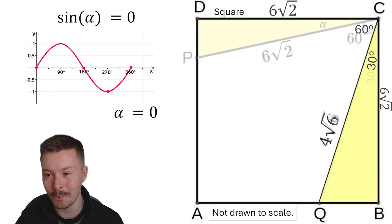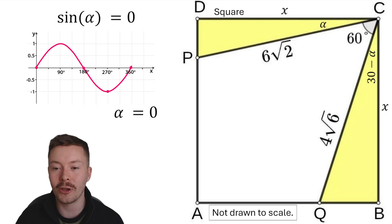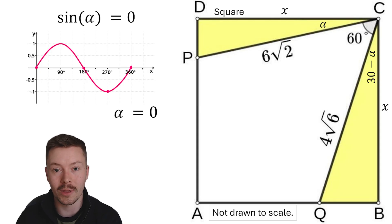The side length is 6 root 2. Alpha is 0, so the distance between PC and DC is 0. They're the same line, and so we've only got this triangle CQB or BCQ, whichever way you want to identify that.